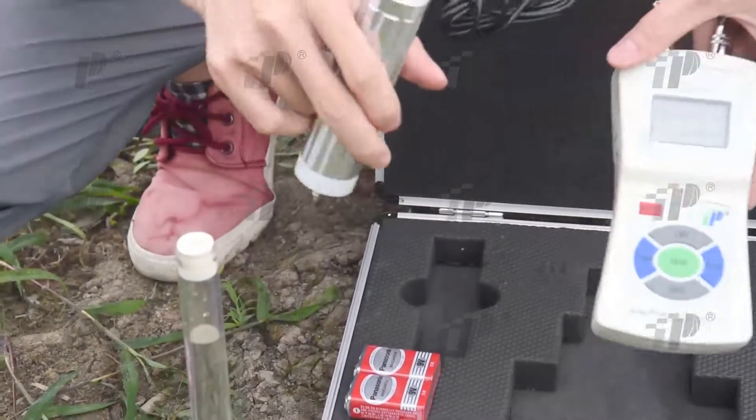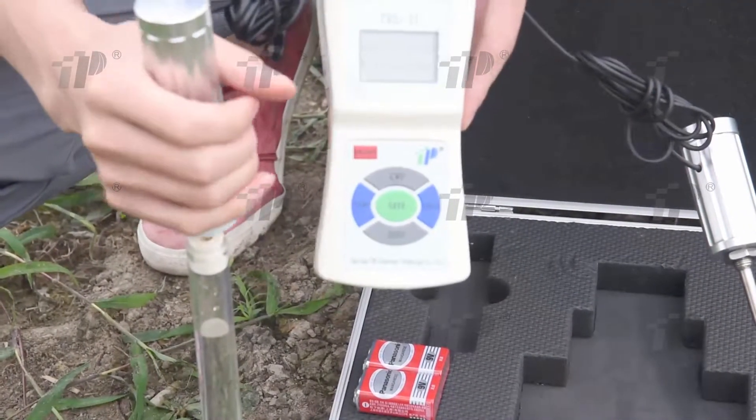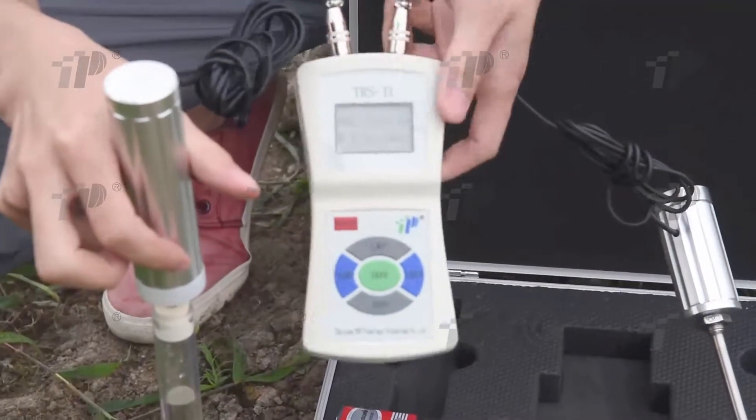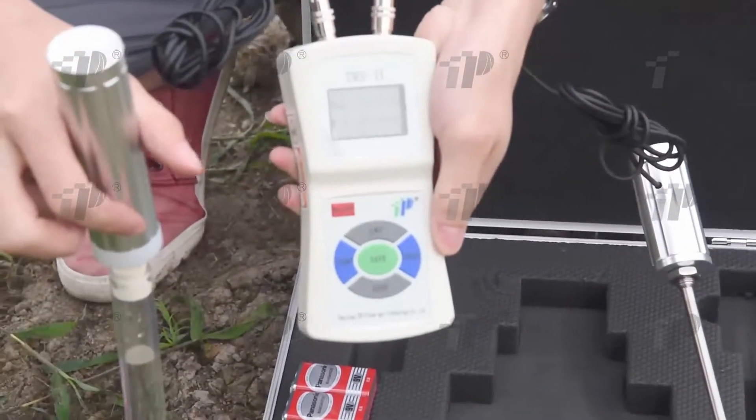After the water potential probe is embedded in moist soil for one hour, you can test the soil water potential. During testing, insert the aviation socket of the water potential sensor into the upper left socket of the displayer.